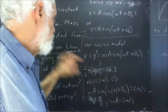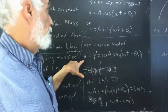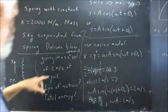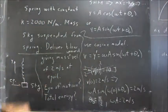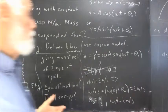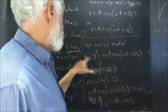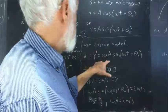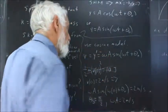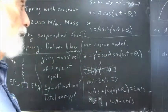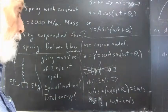Using cosine model, first thing we can find, we have information on the initial velocity, it's 2 meters per second. So, using the cosine model, we take the derivative of the y, and we get y prime equals negative omega a sine of omega t plus theta naught.